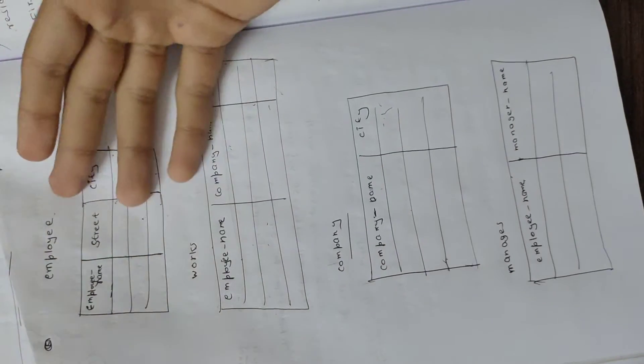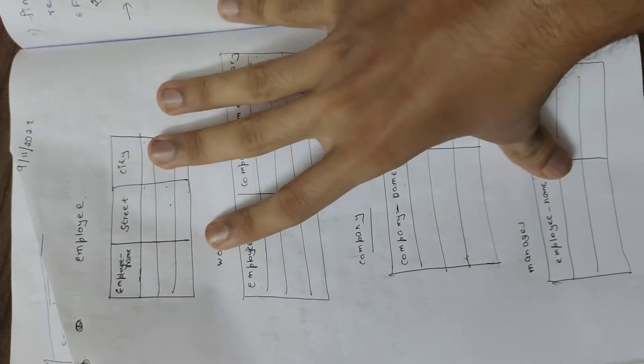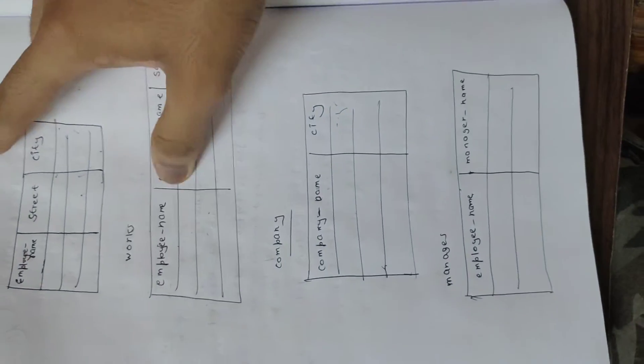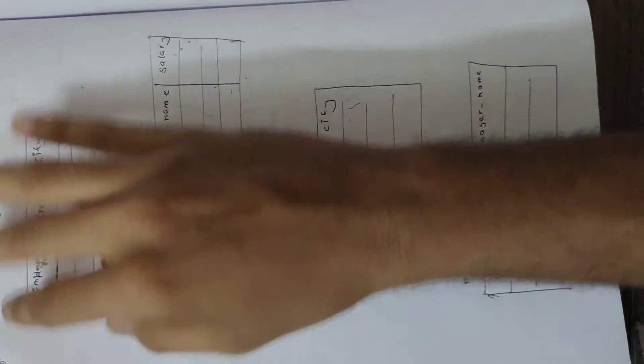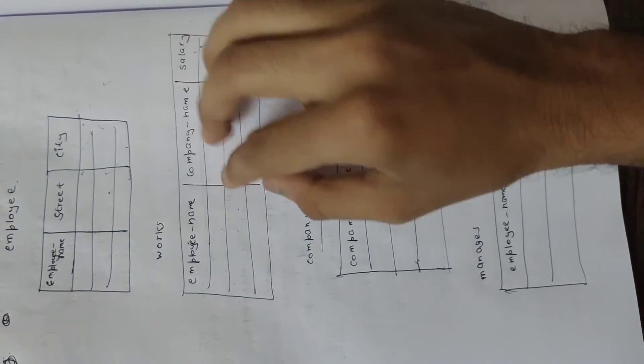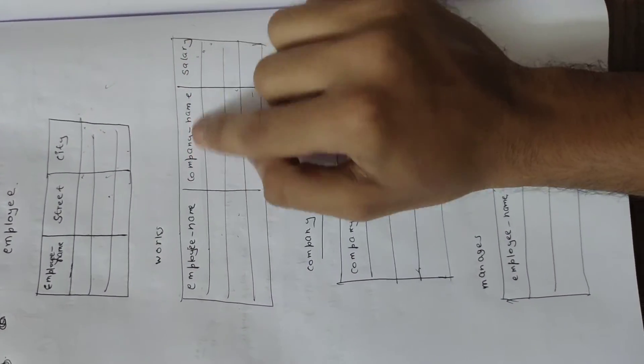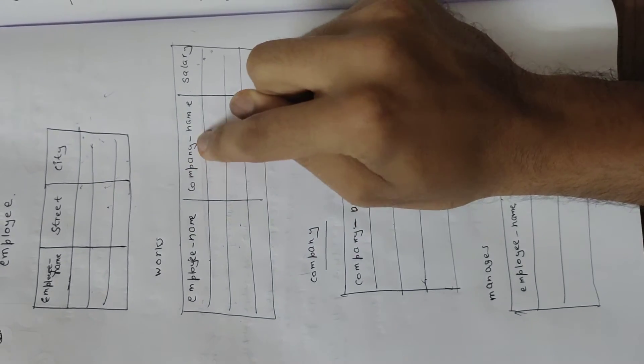So we should find all employees who do not work in company First Bank Corporation. First Bank Corporation is a company name. This table is not there.